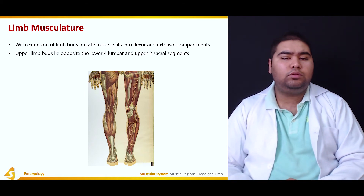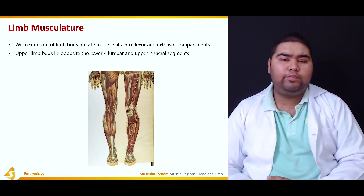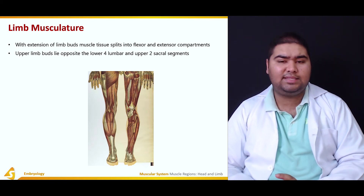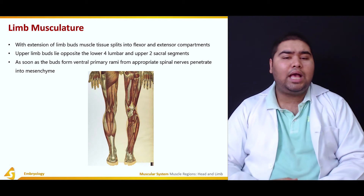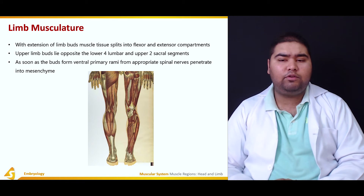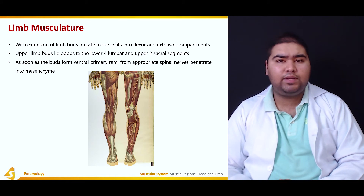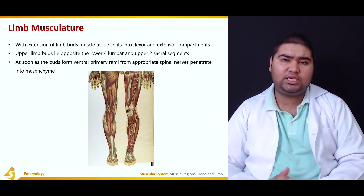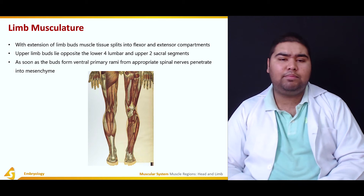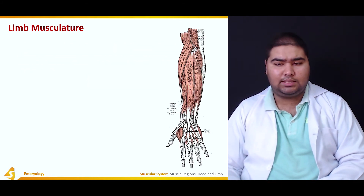The upper limb buds lie opposite to the lower thoracic, lumbar, and upper two sacral segments initially. As soon as the buds form, the ventral primary rami from the appropriate spinal nerves penetrate into the mesenchyme so that they may innervate the muscles.